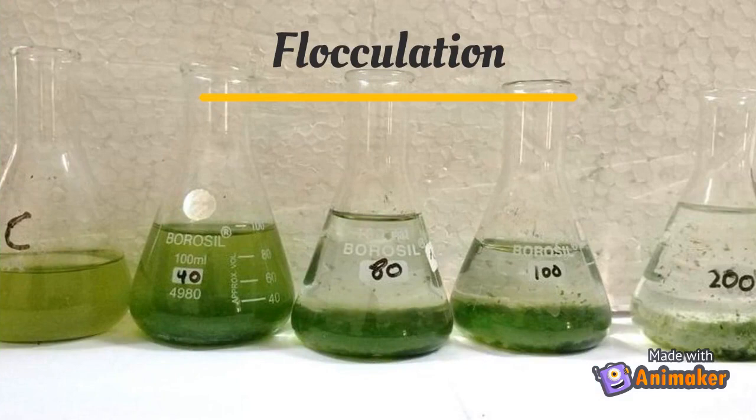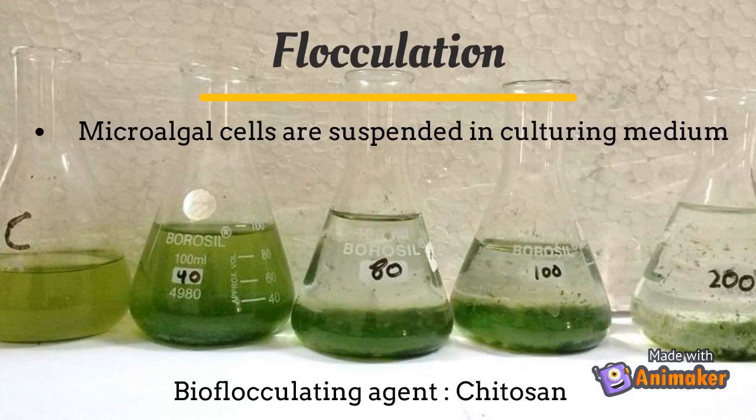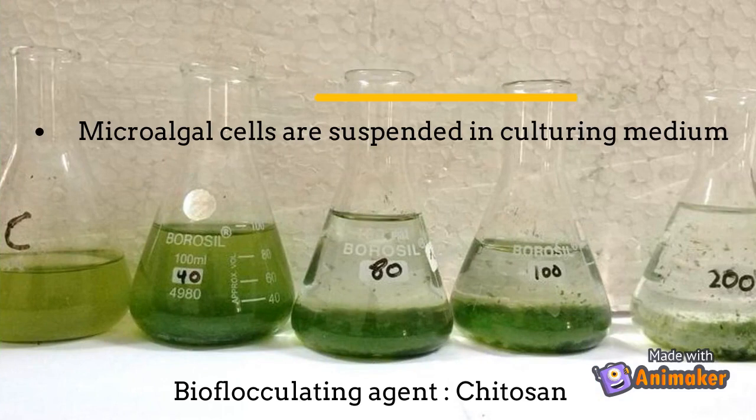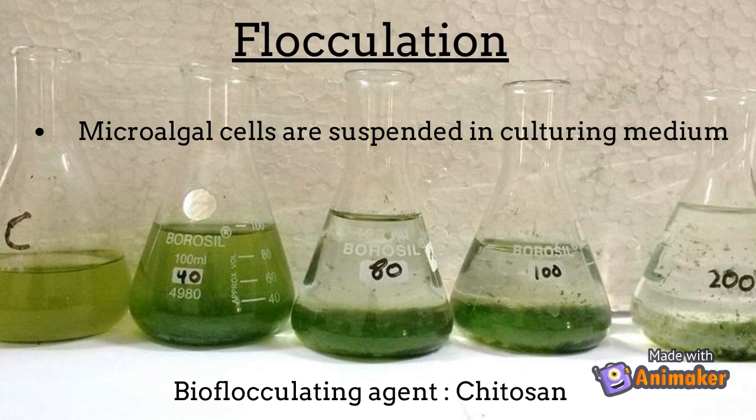During the harvesting stage, microalgae cells are easily suspended in the culturing medium due to their negatively charged surface. By adding bioflocculating agents such as acrylic acid and chitosan, the cells clump together to form floc — a larger particle — for sedimentation.